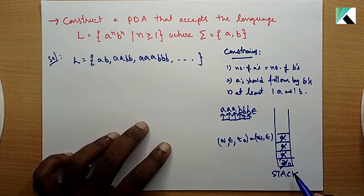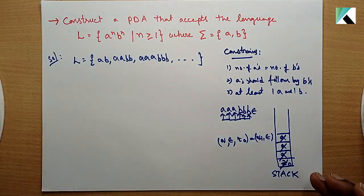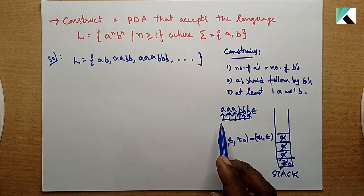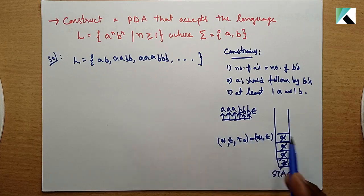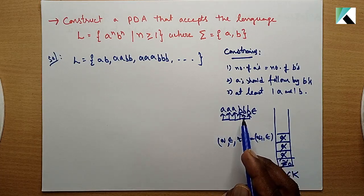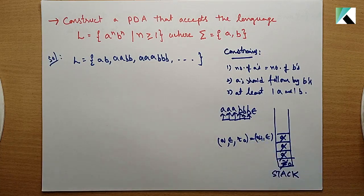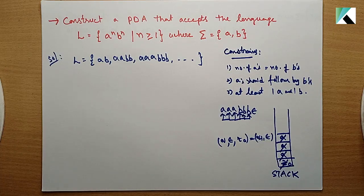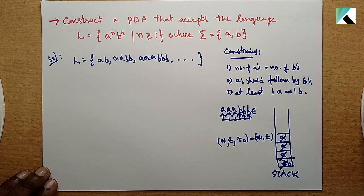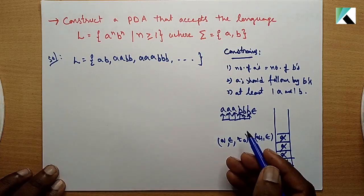So this is the logic: initially, we push A's one by one into the stack. Then when we get B, we pop out A's one by one. Each B pops one A. The first symbol is A, so it gets pushed down to the stack. Now let's design the PDA.